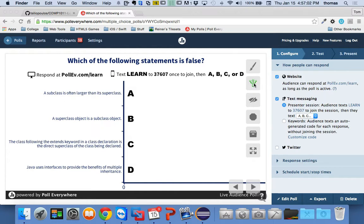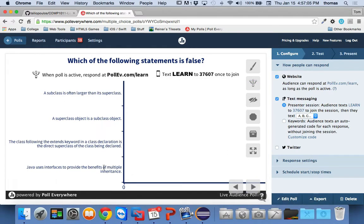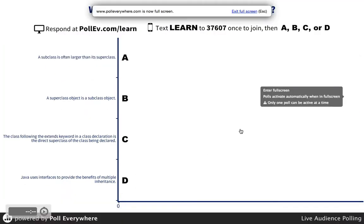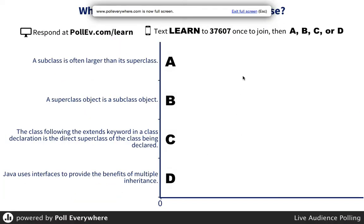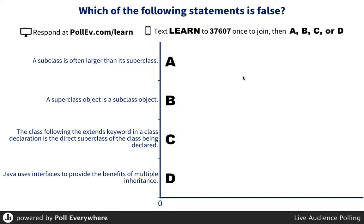So here's the first one. Which of the following statements is false? A: A subclass is often larger than its superclass. B: A superclass object is a subclass object. C: The class following the extends keyword in a class declaration is the direct superclass of the class being declared. And D: Java uses interfaces to provide the benefits of multiple inheritance.